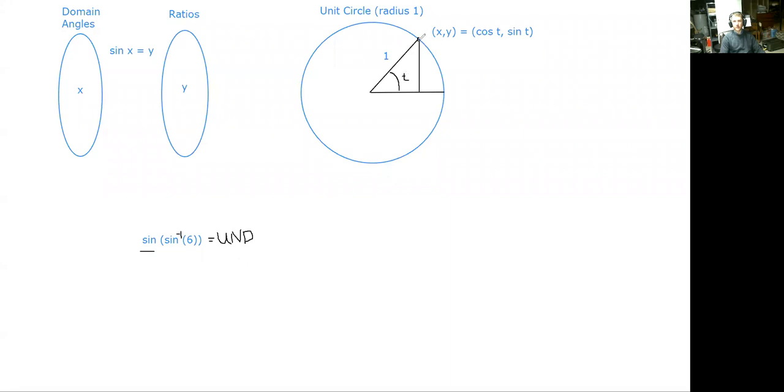So if this angle is T, this point's x and y-coordinates are cosine T and sine T. So let's look at the ratios for sine of T. How big can sine be?